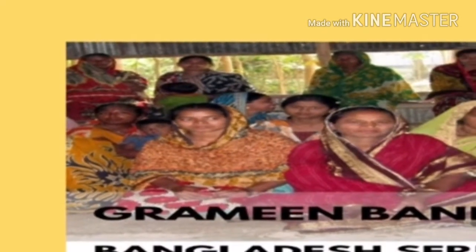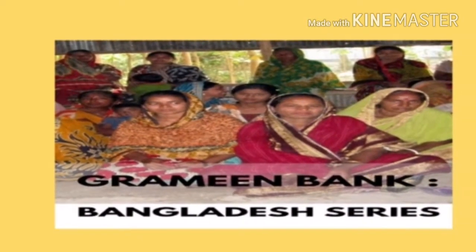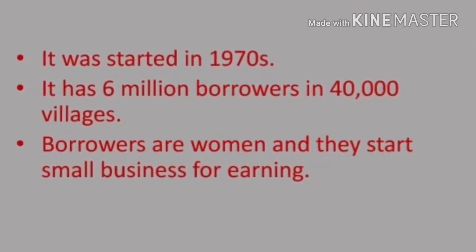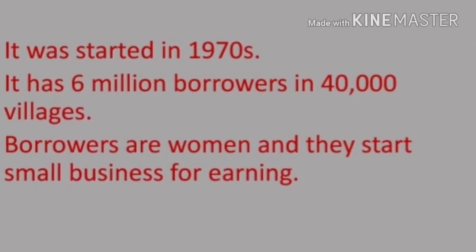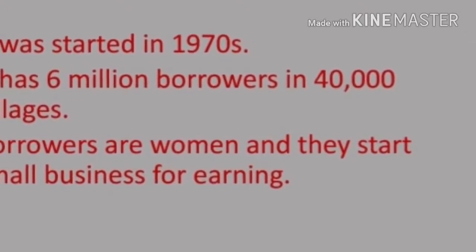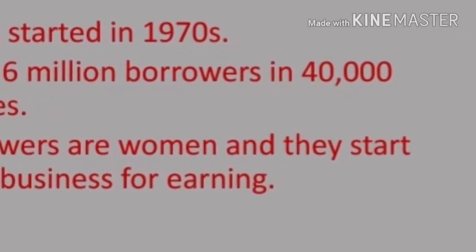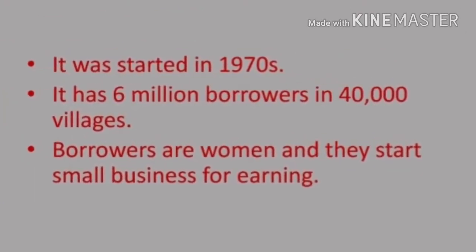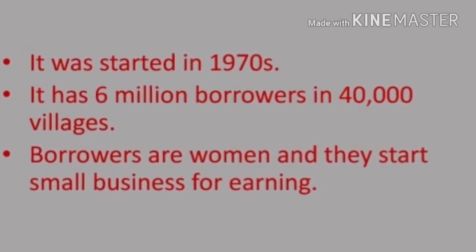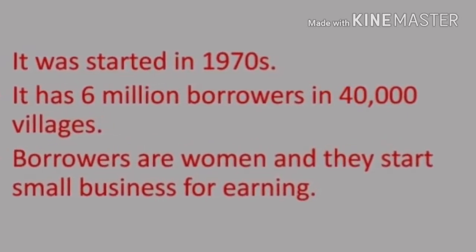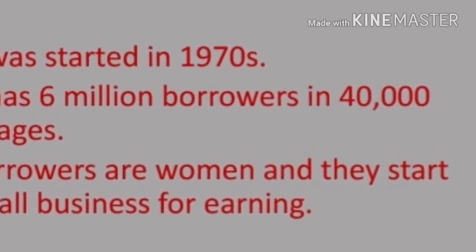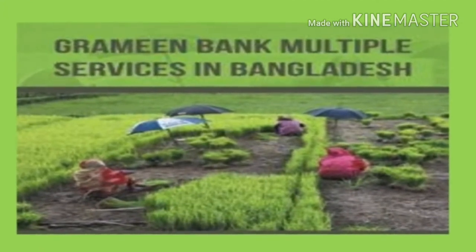Our next point is the Grameen Bank of Bangladesh. It was started in 1970 and has 6 million borrowers in 40,000 villages. Almost all the borrowers are women who belong to poor sections of society. These borrowers have proved that not only are poor women reliable borrowers, but they can also start and run a variety of small income-generating activities. Grameen Bank has played a significant role in improving the condition, especially of poor women in Bangladesh.